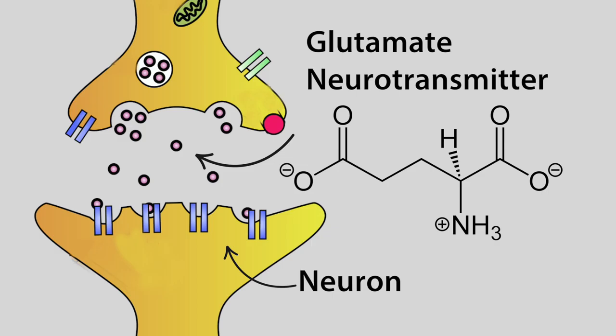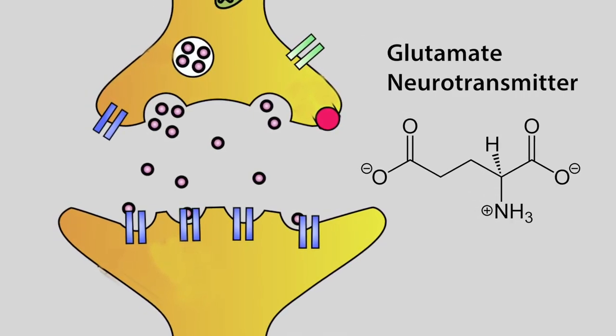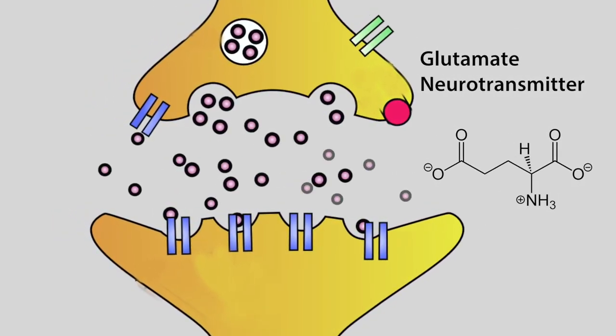Glutamate is a neurotransmitter that's abundant in your nervous system. It is typically an excitatory neurotransmitter, but if there's too much glutamate, it can overstimulate and cause cellular death.